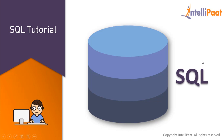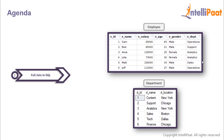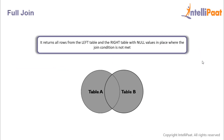Hey guys, welcome back to this SQL tutorial series. In this session we'll be implementing the full join. The full join basically returns all the records from the left table and also all the records from the right table. So if we take table A and table B, applying a full join on these two tables gives us all the records from both. Wherever the join condition is not met, we'll get null values in that place.